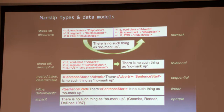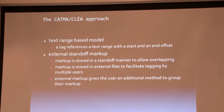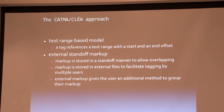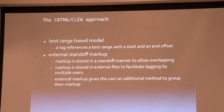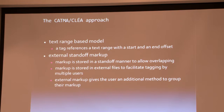How do we implement all of this in CATMA? We use a text range-based model where a tag references a text range with offsets, and we use an external standoff markup approach where markup is stored in that way in order to allow overlap and to facilitate tagging by multiple users. Markup in itself can then be aggregated, exchanged, reapplied, and exploited. So I can call a text which you have marked up, but I don't necessarily have to use all of your markup — I can just take a subset of your tags.